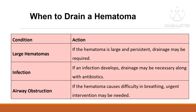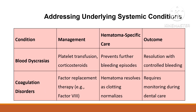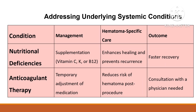If the hematoma is very large, becomes infected, or causes difficulty in breathing, urgent intervention and drainage are required. Systemic factors play a crucial role in hematoma healing. Blood disorders may require platelet transfusion or corticosteroids. Coagulation disorders like hemophilia require specific therapies such as factor replacement. Nutritional deficiencies such as vitamin C or B12 must be corrected through supplementation, and patients on anticoagulant therapy may need temporary medication adjustment in consultation with their physician.